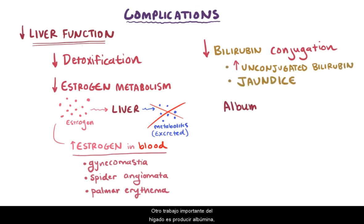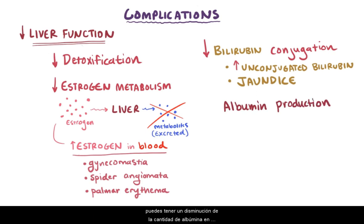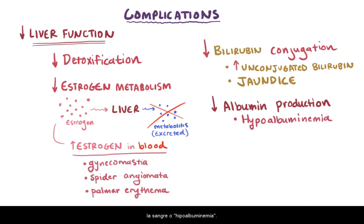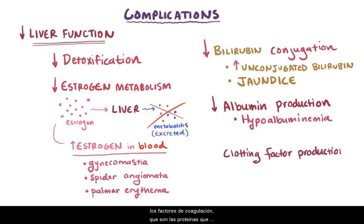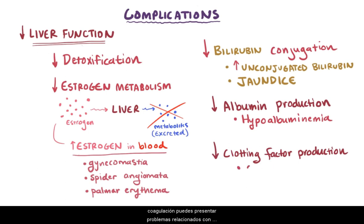Another important job of the liver is producing albumin. If the liver is not functioning right, you can have a decreased amount of albumin in the blood, or hypoalbuminemia. Finally, the liver helps in making clotting factors — proteins that help coagulate your blood. When you aren't producing these coagulation factors, you can develop issues related to your ability to coagulate blood, which you need in order to stop blood loss after an injury.